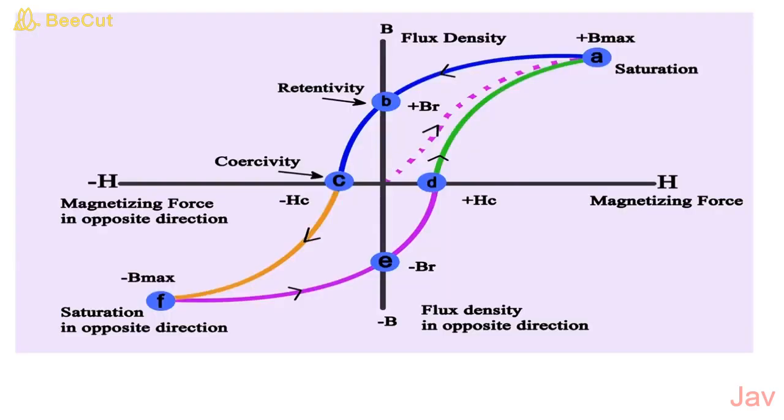A typical BH curve of a ferromagnetic material is taken to one cycle of magnetization, which is called the hysteresis loop. Retentivity is the residual magnetism which is retained inside the material. And coercivity is the field required to demagnetize the specimen.